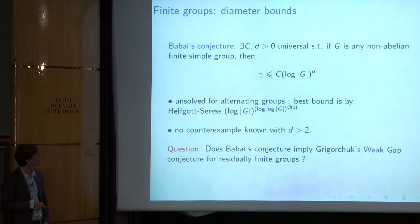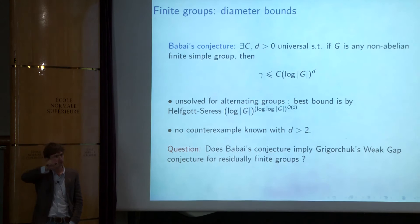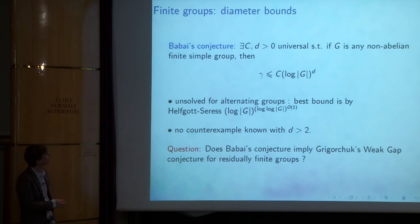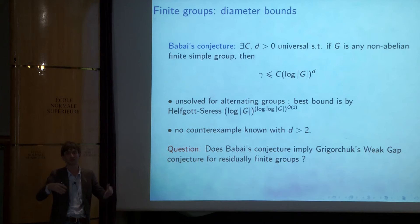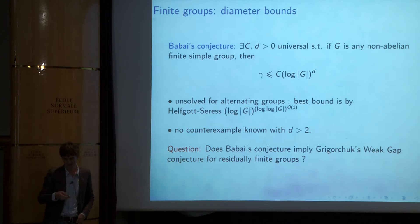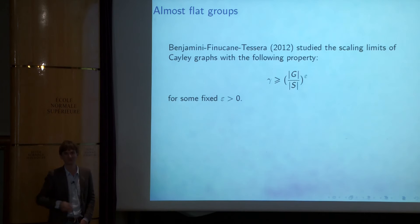I wonder: is it true that Babai's conjecture implies Grigorchuk's weak gap conjecture for residually finite groups? Grigorchuk wrote a paper reducing the gap conjecture to two classes of groups: simple groups and residually finite groups. For residually finite groups, there is a clear connection: if you have lots of finite quotients that you can generate quickly, it means you have at least some large size of some ball. It's probable that a combination of results can resolve this.